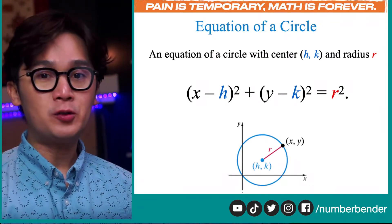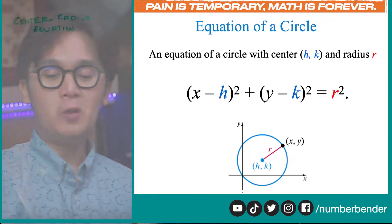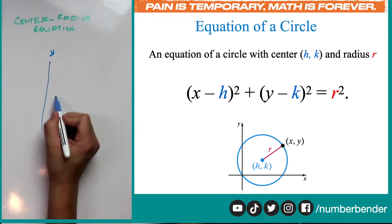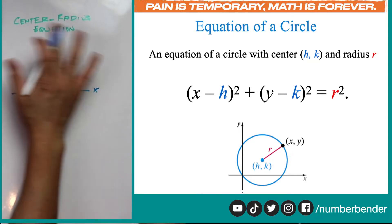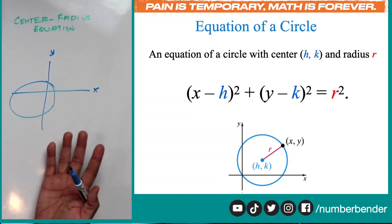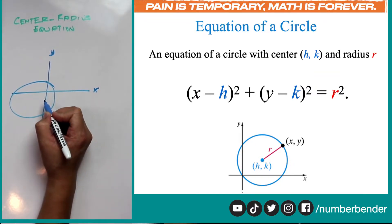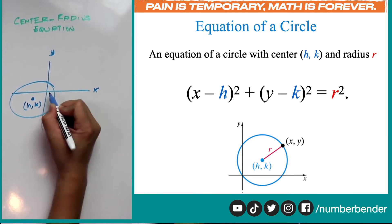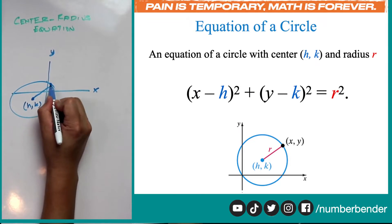For our visual, we are seeing a circle with radius r and center at hk. We have an xy plane, with the vertical axis or y axis, and the horizontal axis or x axis. Let's say we have a circle anywhere on the xy plane. To write the center radius form, we need our center, denoted by hk, and the distance from the center to any point on the circle, which will be our radius.